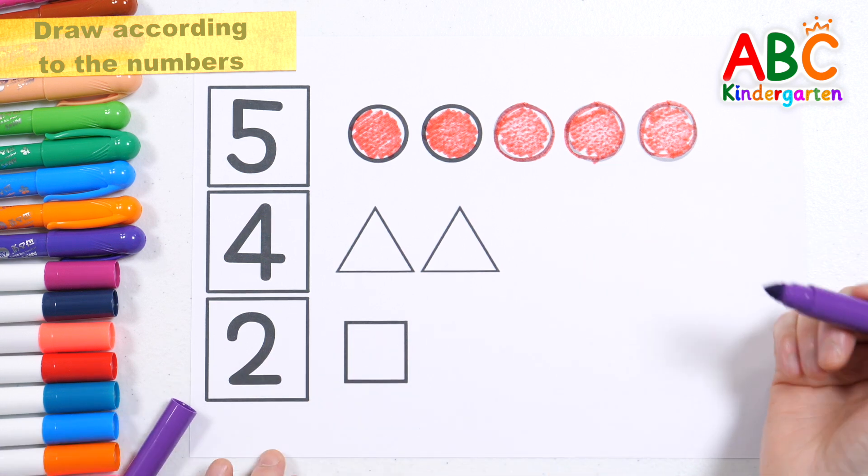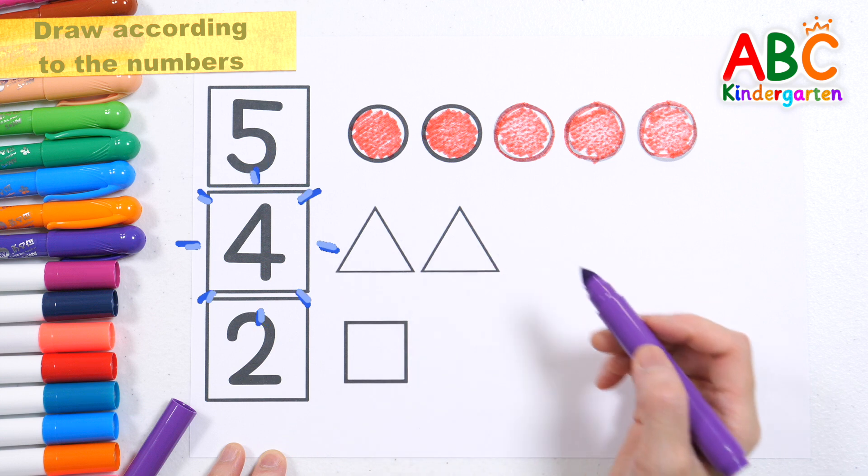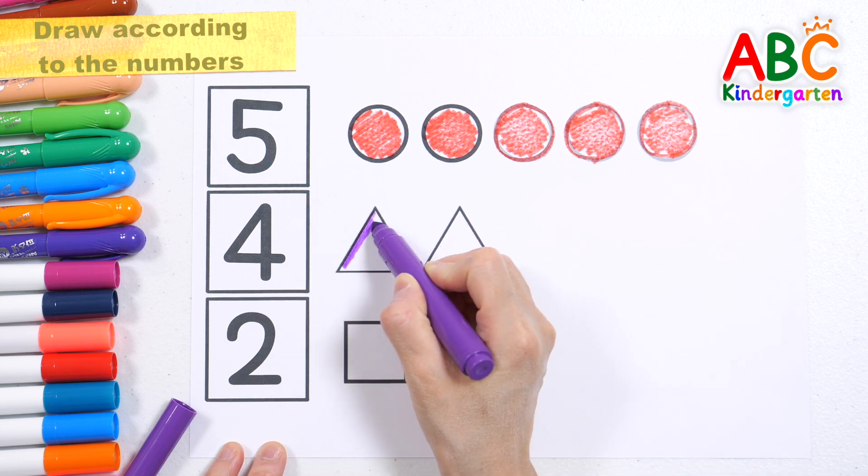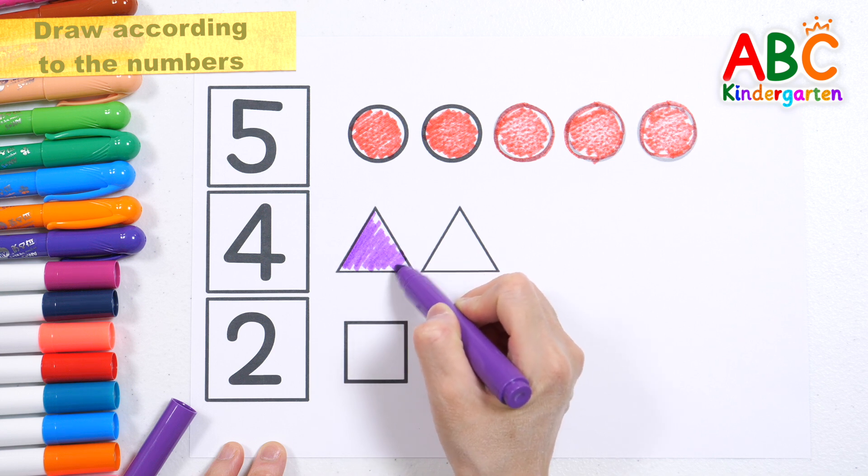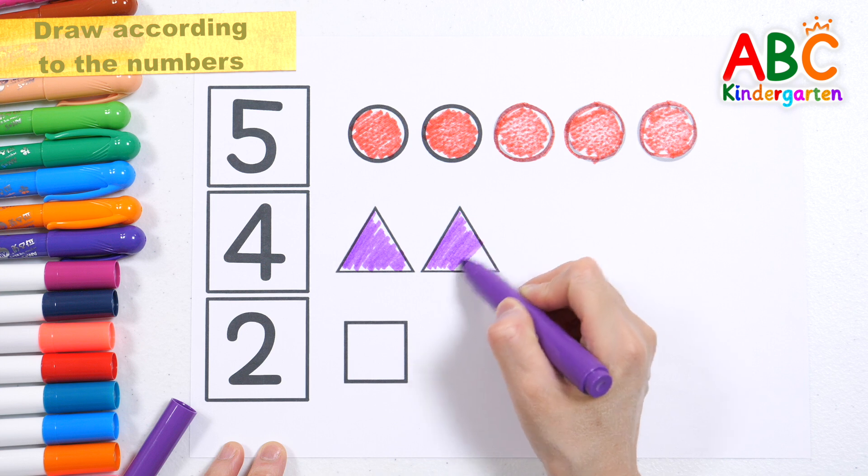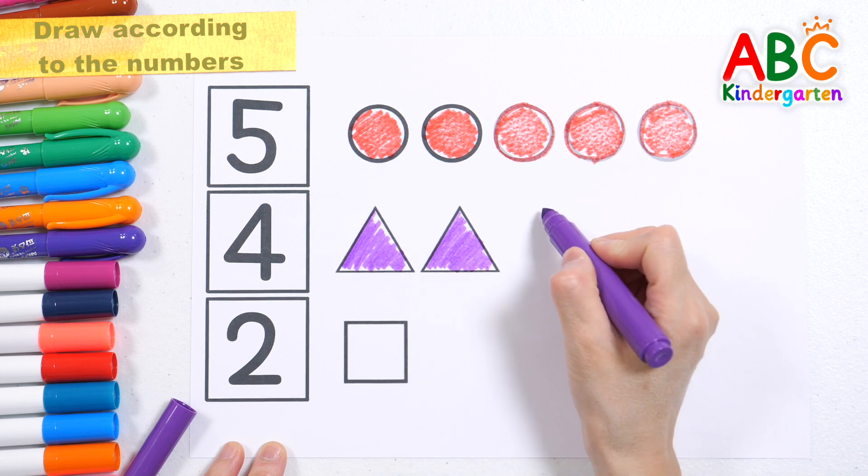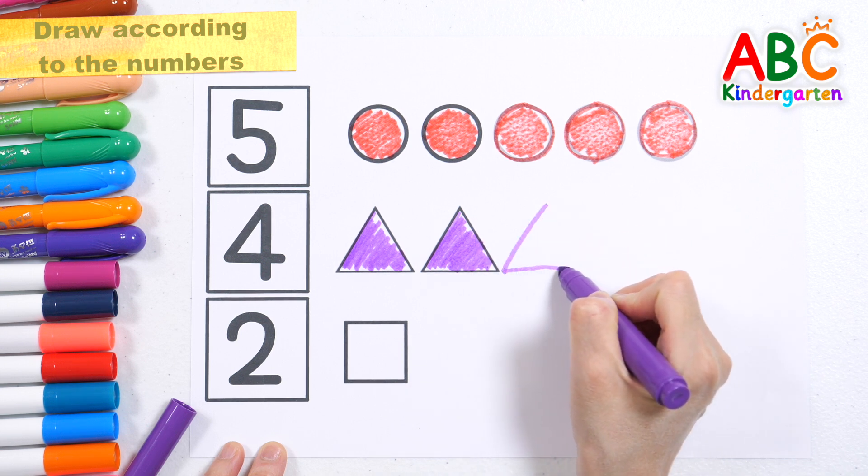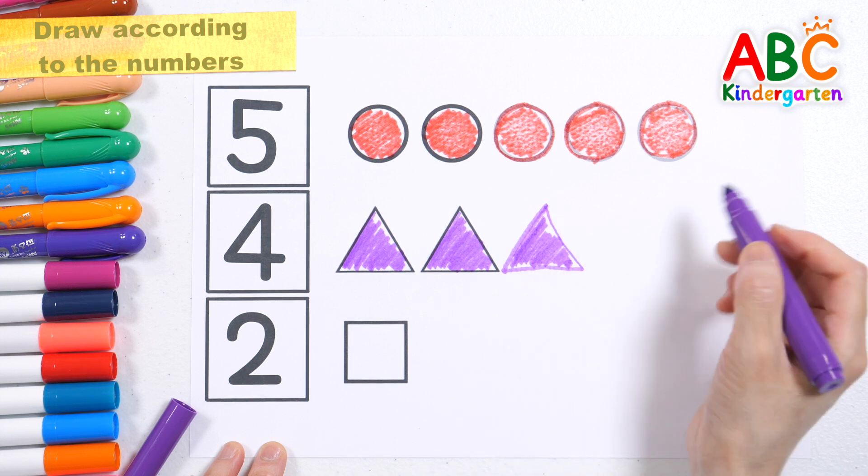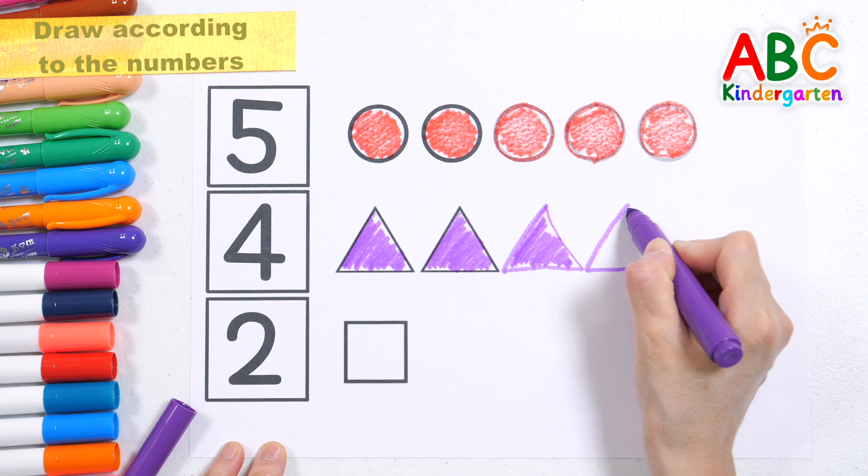Let's look at the numbers and draw as many triangles as the numbers. Four. One, one, two, two, three, four, four.